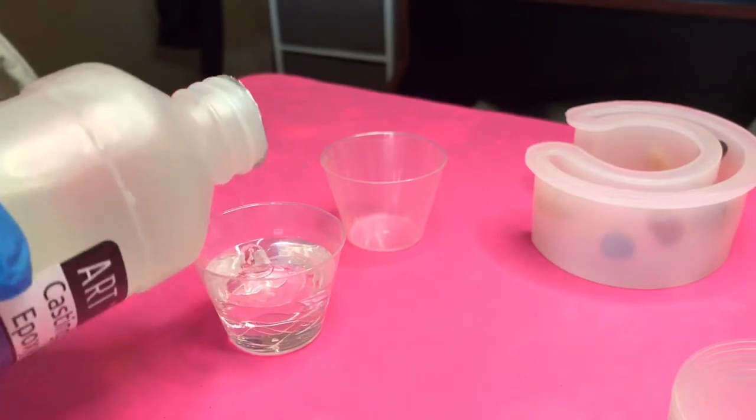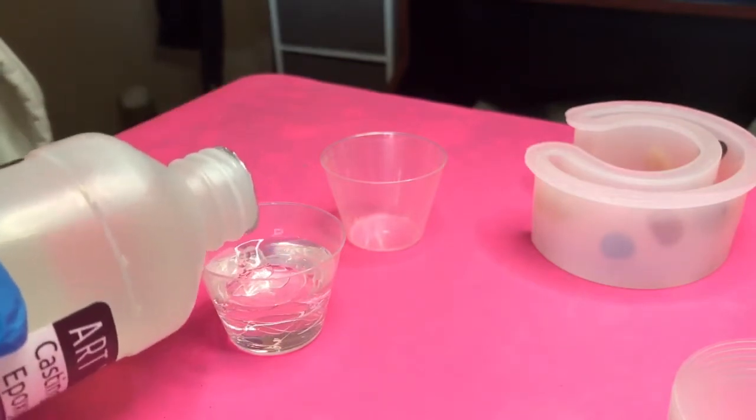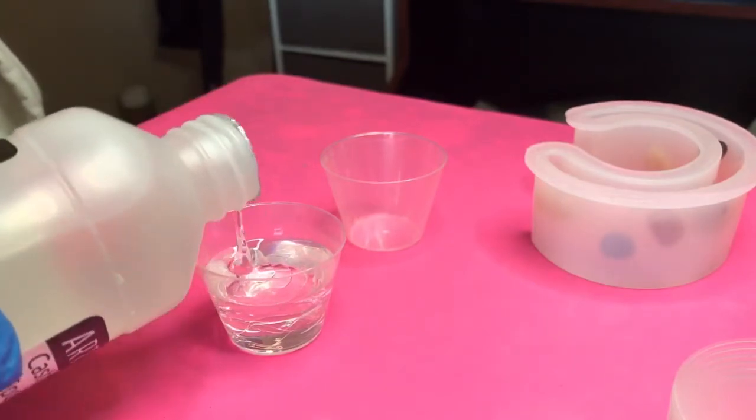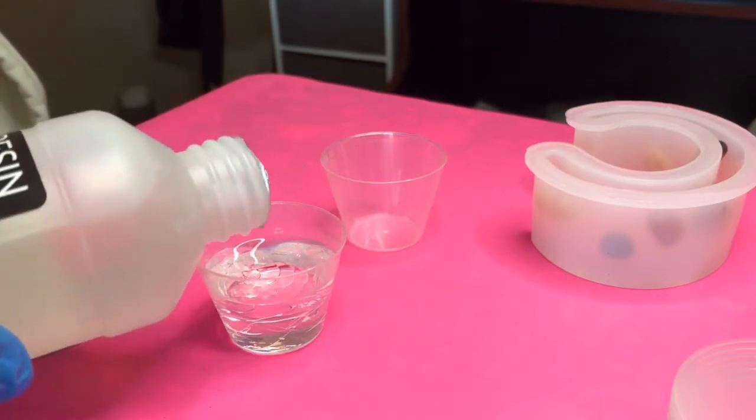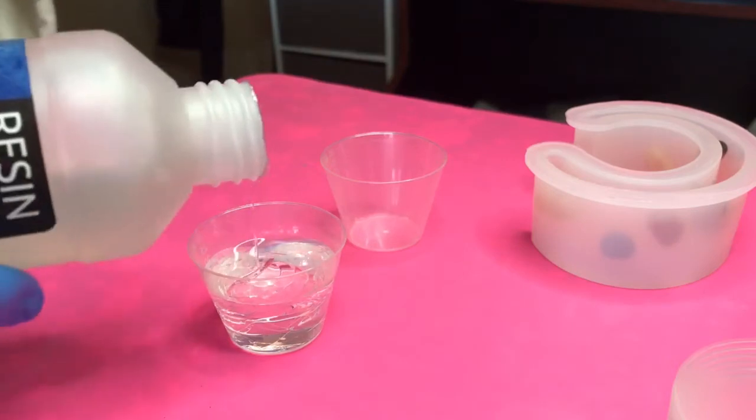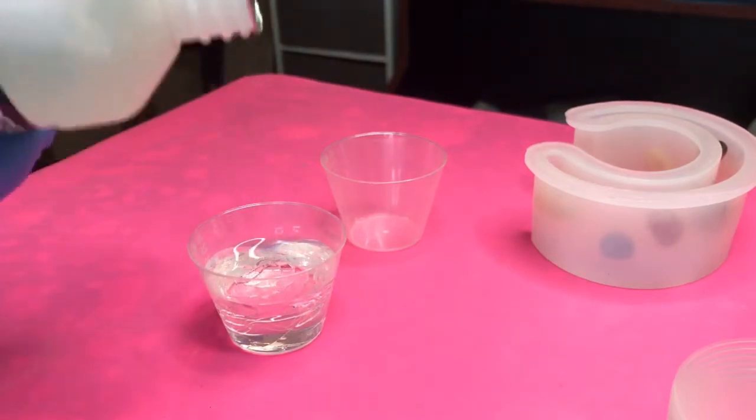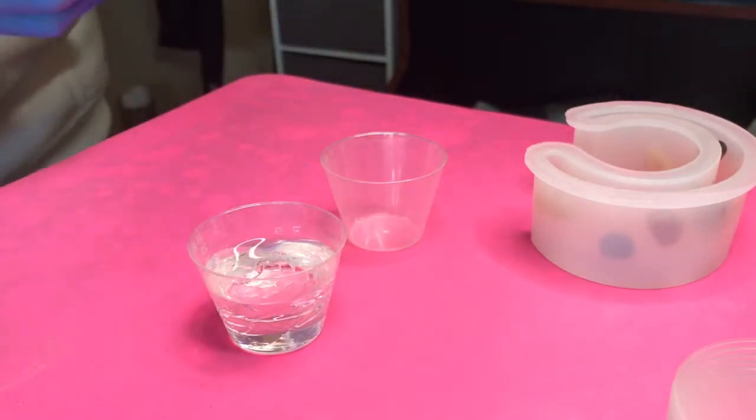Make sure you get down to eye level and look at the markings on your cup. You have to be exactly right because if you're one ounce or one and a half ounces off, it's not going to turn out right. Things to keep on hand are plastic stir sticks, baby wipes.